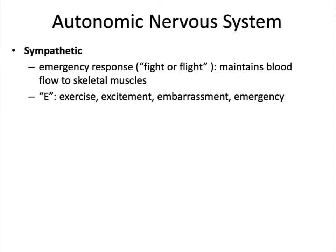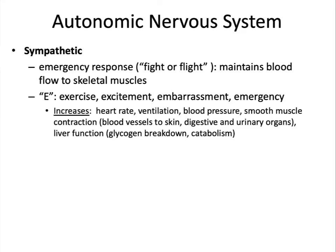During these situations, the sympathetic nervous system responds by increasing the heart rate, ventilation rate, blood pressure, and smooth muscle contraction in some areas, such as in the blood vessels to the skin, digestive, and urinary organs. When you increase smooth muscle contraction in these areas, it actually reduces the amount of blood going to the skin, digestive, and urinary organs.